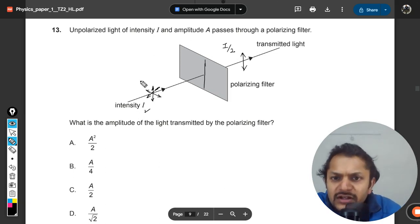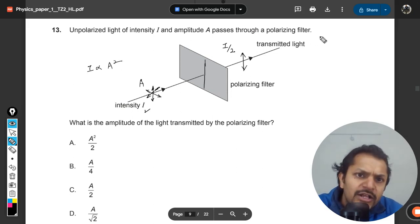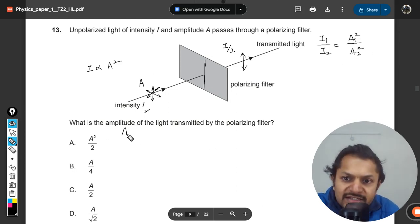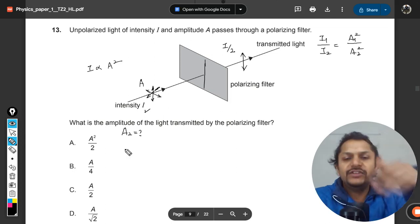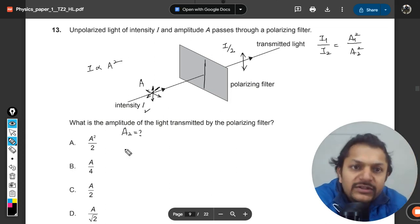But now here the amplitude was A, so we can say that intensity is directly proportional to amplitude square. So I can create a formula: I₁ divided by I₂ is equal to A₁ square divided by A₂ square. And the question is, what is the A₂, which is after getting polarized, what will be the amplitude? We want to find that.